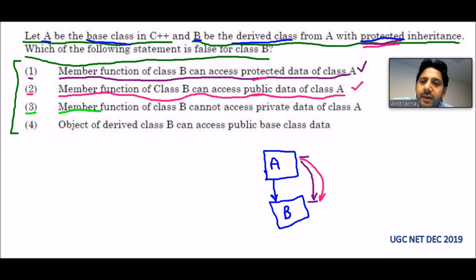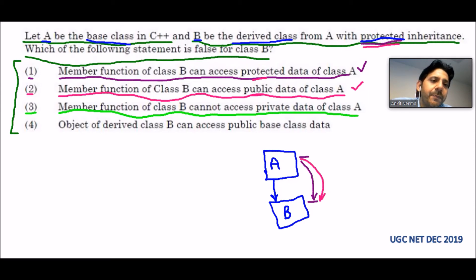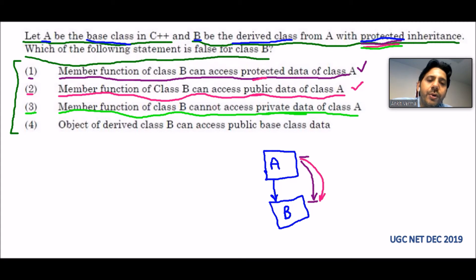Option C says: member function of class B cannot access private data of class A. In any inheritance — public or protected — the private members of the base class cannot be inherited into the derived class. So it is not possible in protected inheritance either; the private members of class A will not be inherited into class B. This statement is also correct.